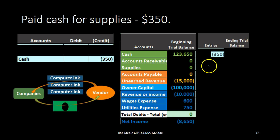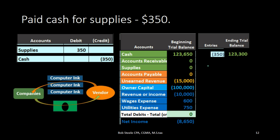Posting that out: we have a debit in cash of 123,650 before the journal entry. We credit it by 350, bringing the cash balance down to 123,300. Now we need to debit something for 350 — since there are only two accounts in this transaction, that debit will go to supplies.